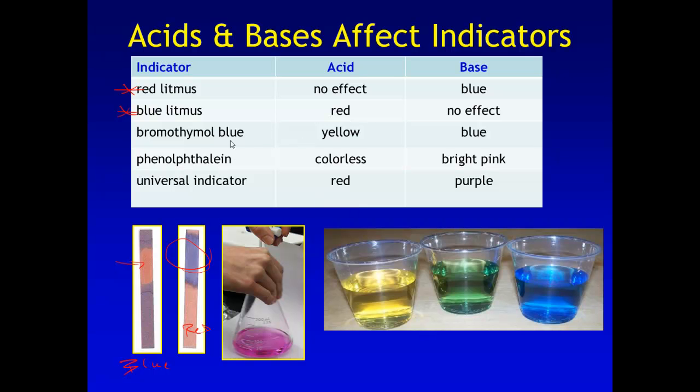Now, this one right here, bromothymol blue, we got to use this in a lab for our gases unit. So when it is an acid, it's yellow. And when it's a base, it's blue. You might have seen it in green. A few of my BTB bottles are green. And that's because this is more of a neutral pH. So it's halfway between the yellow and the blue.